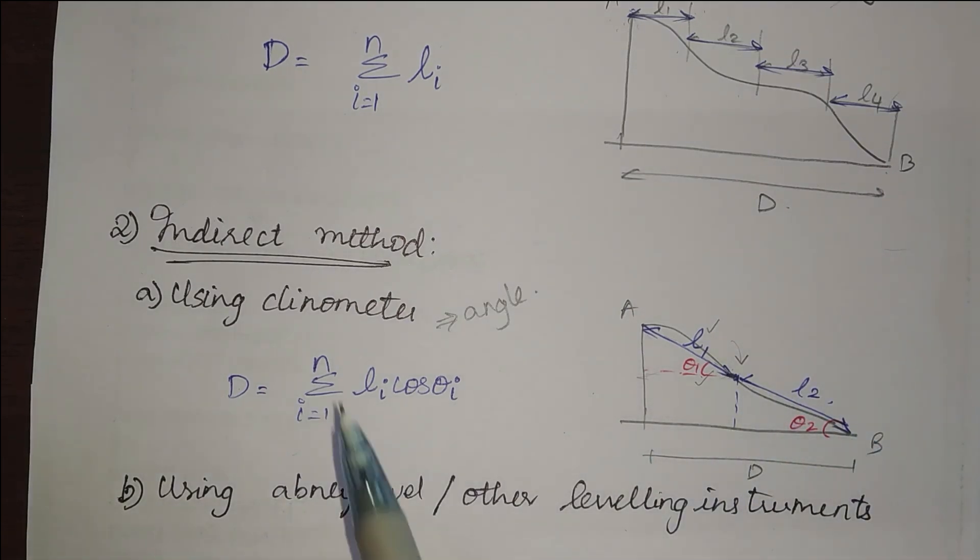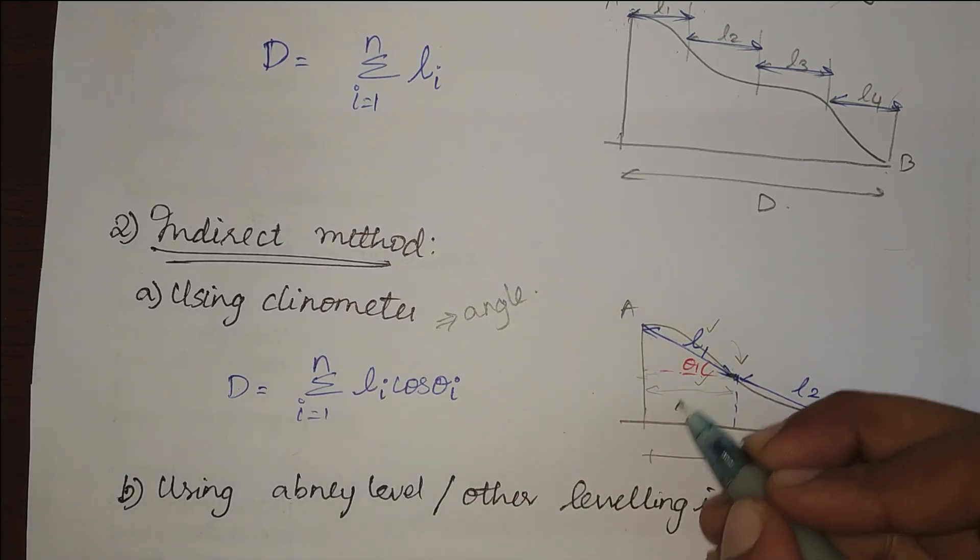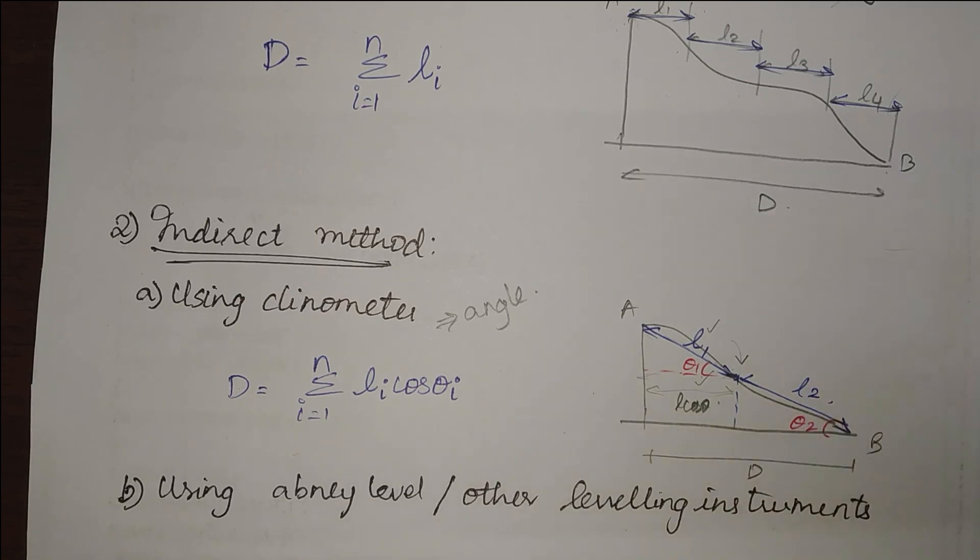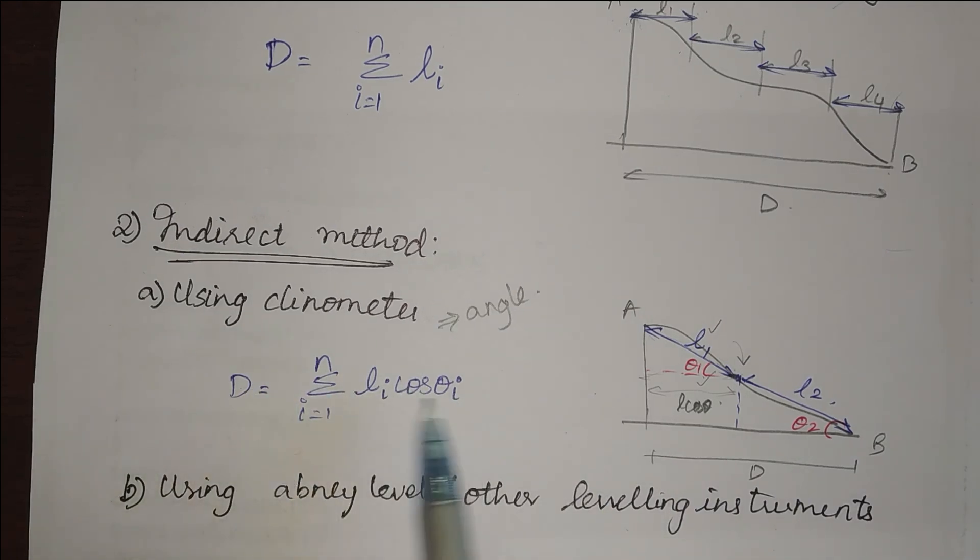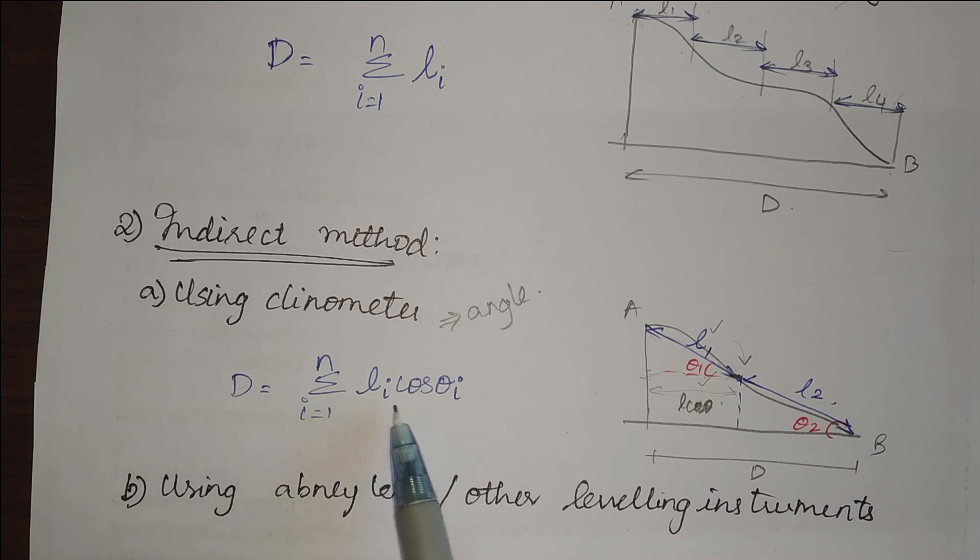From this triangle you can understand that by normal trigonometry, the horizontal distance is equal to l cos theta. When multiple number of sets are repeated, we will do summation to find the total distance which gives summation of li cos theta i. This is using a clinometer by using the angles.